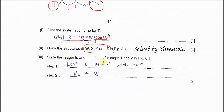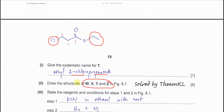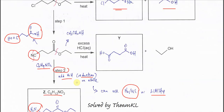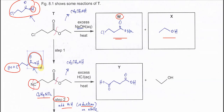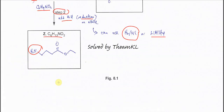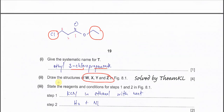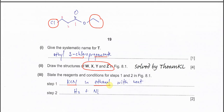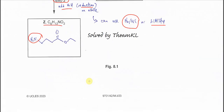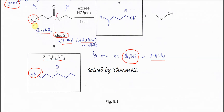State the reagents and conditions for step one and step two. Step one is to form a nitrile from the haloalkane. We need to use KCN in ethanol with heat. The chlorine will be substituted by the cyanide to form the nitrile. Step two is the reduction of the nitrile, so we use H2 with nickel catalyst.